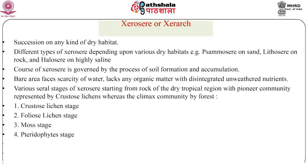The next stage is the pteridophyte stage. Availability of moisture, humus, and soil for anchorage facilitates the colonization of pteridophytes — for example, Selaginella and Adiantum. These plants increase the process of weathering. Biological activities, rapid decomposition of organic matter, and more soil accumulation and improved moisture status create conditions for the growth of herbaceous plants.